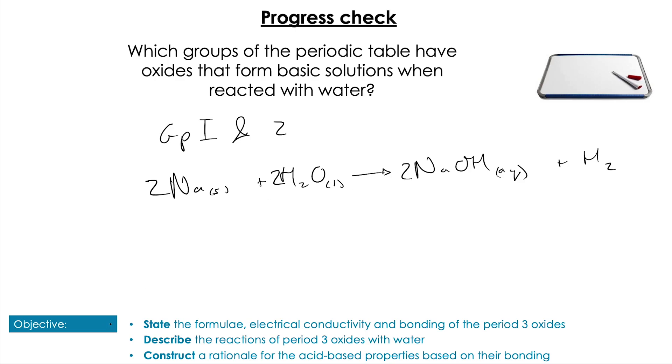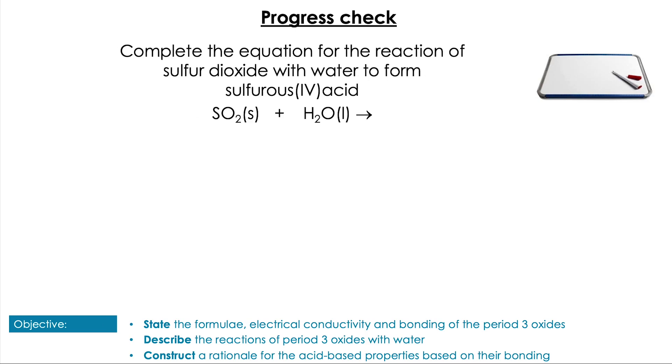Last question then: complete the equation for the reaction of sulfur dioxide with water to form sulfurous acid. Pause the video to give yourself some thinking time. So, remembering when we've used SO2, we're going to get our sulfurous acid, so it's going to be H2SO3 aqueous as our product.